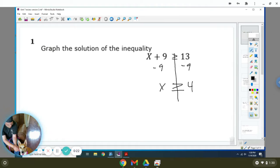So this would be greater than or equal to 13 minus 9, which will be 4. So your solution is x is greater than or equal to 4, so you're going to draw your number line. Since it's equal to, it's going to be a solid dot above the 4, and it's going to go towards the right because it's greater than.